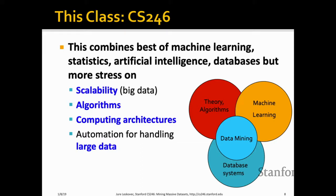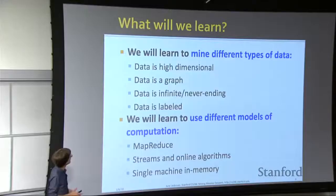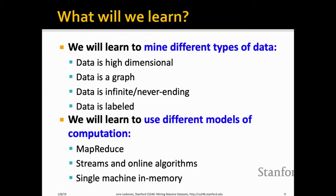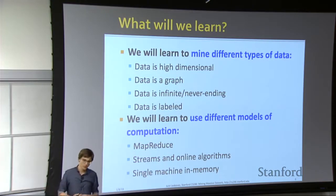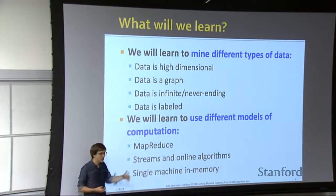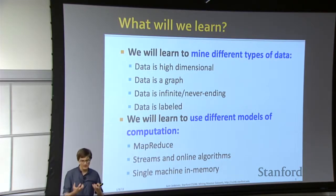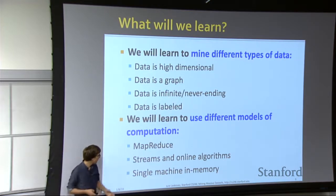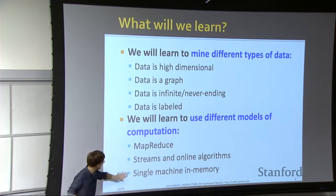What will we learn? We'll learn how to extract value and make predictions from different types of data — super high dimensional data, graph data, infinite or never-ending stream data, and labeled or unlabeled data. We'll also talk about different computing architectures: MapReduce as a distributed framework, streaming and online algorithms that see one data point at a time, and single machine in-memory algorithms.